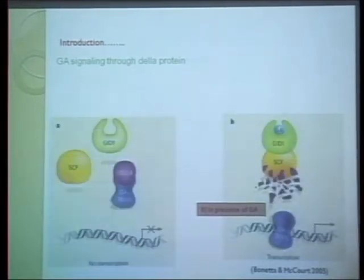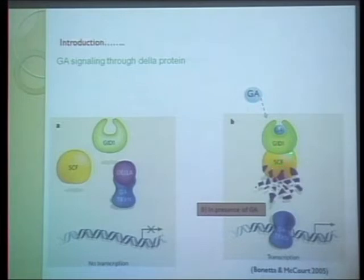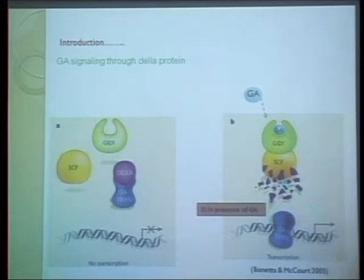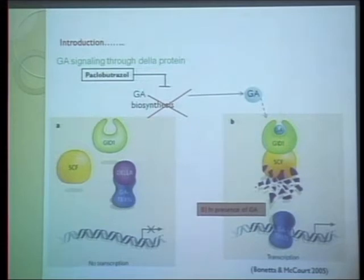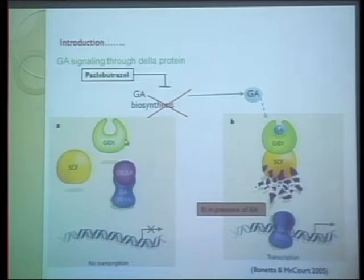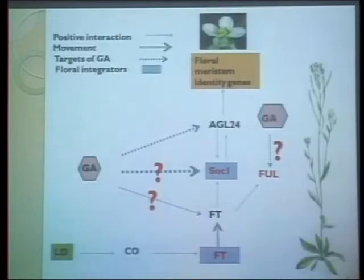GA signaling in plants works as follows: the plant produces GA, which is accepted by the GID1 receptor. Once GA binds GID1, it binds with the SCF complex and degrades the DELLA protein. Once DELLA is degraded, the transcription factor is released and transcription can occur, allowing us to see the function of GA. In the absence of GA — such as when we apply Paclobutrazol — the DELLA protein is not degraded, and transcription does not occur.